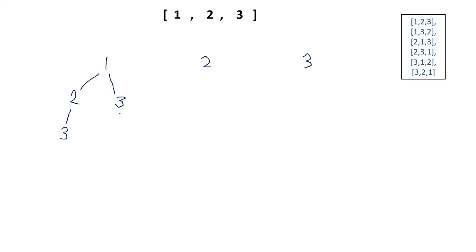Now if both 1 and 2 are fixed, the only choice left is 3, because 1 and 2 are already used. So by starting with 1, I can get 2 combinations: 1 2 3 and 1 3 2. Now we jump to fixing 2 first — then the choices are 1 and 3. After fixing 2 and 1, the only choice left is 3, and from 2 3 the only choice left is 1.